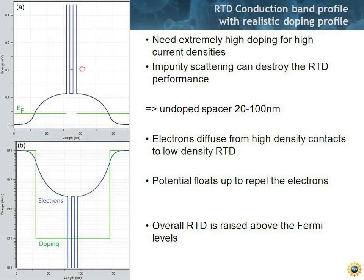So that is why this conduction band is very much bulged up. That's more typical how an RTD looks in reality. So overall, this whole RTD structure is raised way above the Fermi level. It's really rising way above.